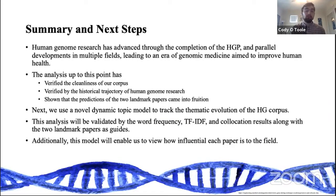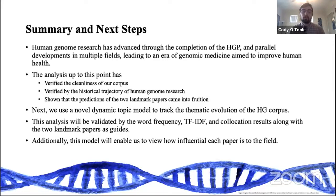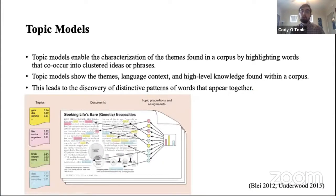In summary so far: human genome research has advanced through the completion of the Human Genome Project and parallel developments in multiple fields, leading to an era of genomic medicine aimed at improving human health. The analysis has verified how clean the corpus is, and has been validated by the historical trajectory of human genome research, showing that the predictions of the two landmark papers came to fruition. Next, we use the novel Dynamic Topic Model to track the thematic evolution of the human genome corpus, validated by word frequency, TF-IDF, and collocation results along with the two landmark papers.